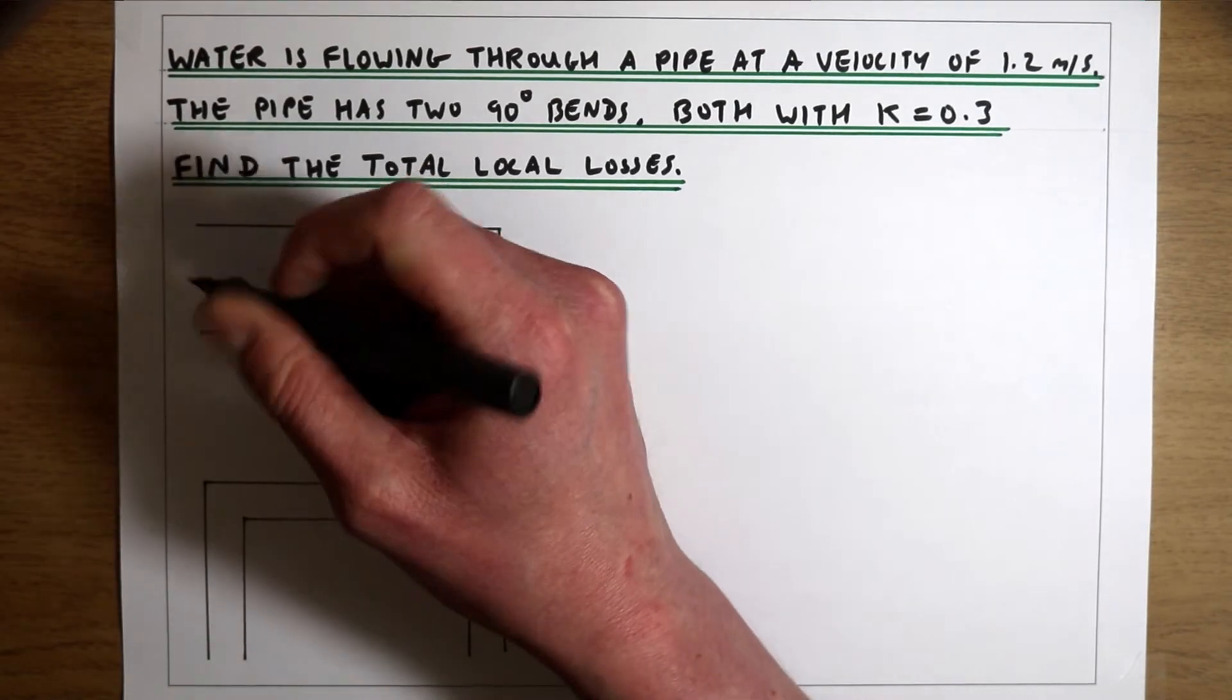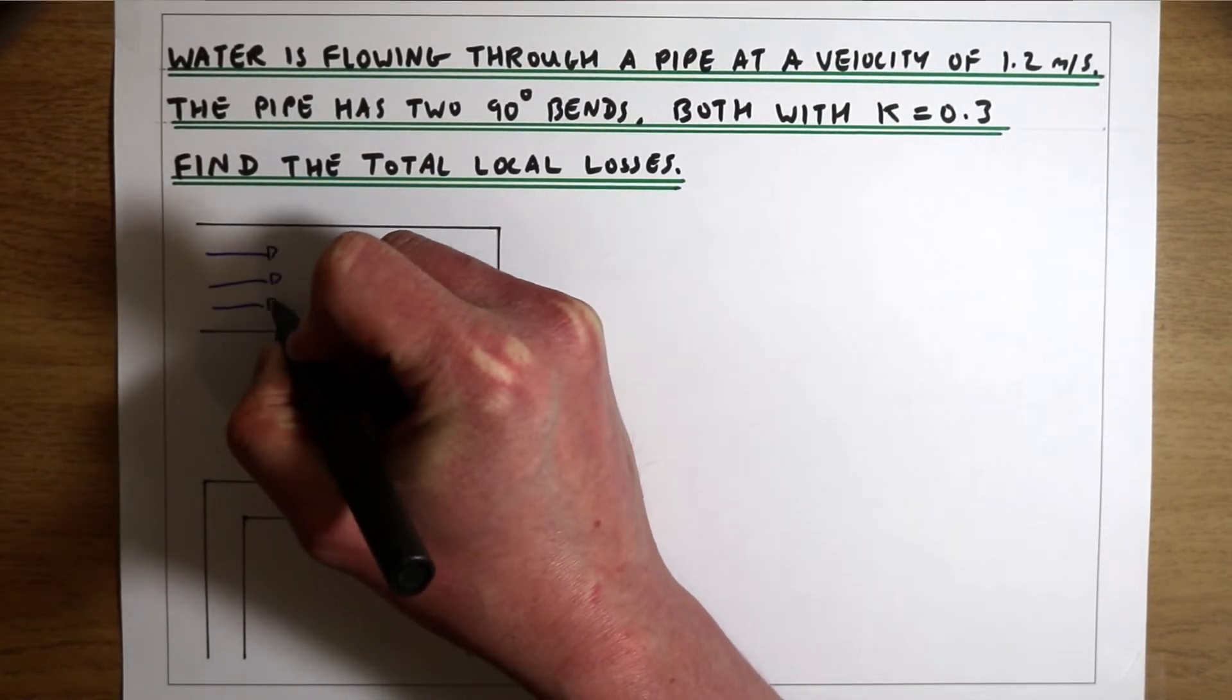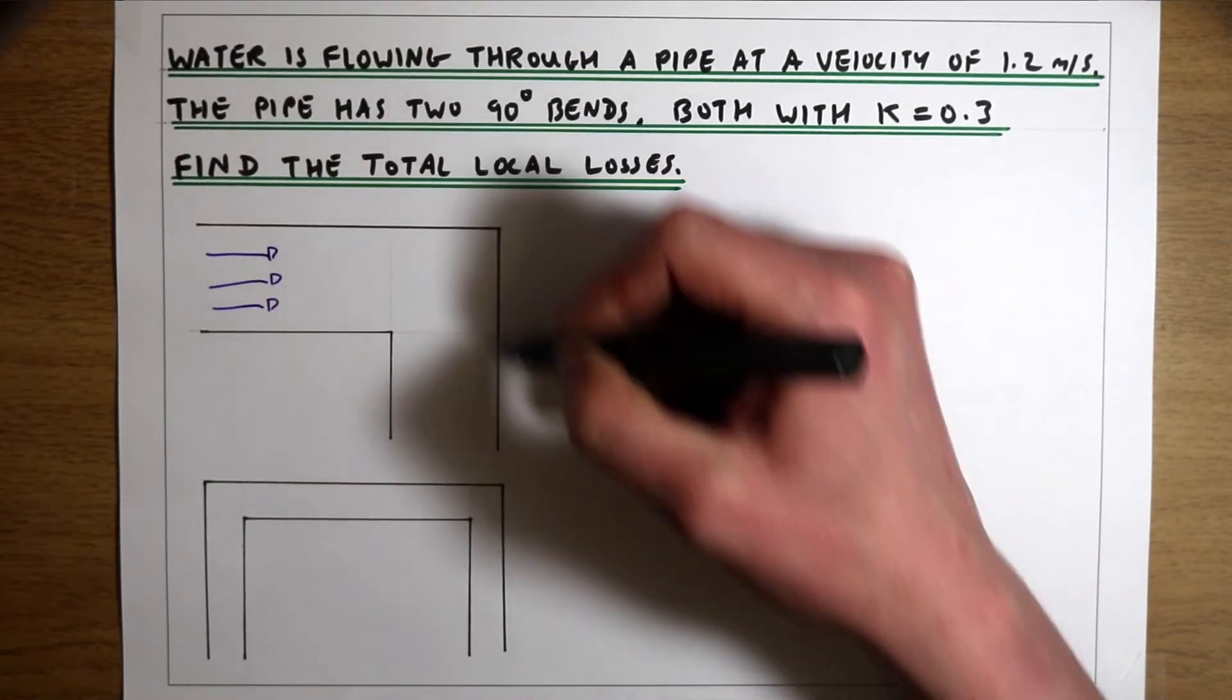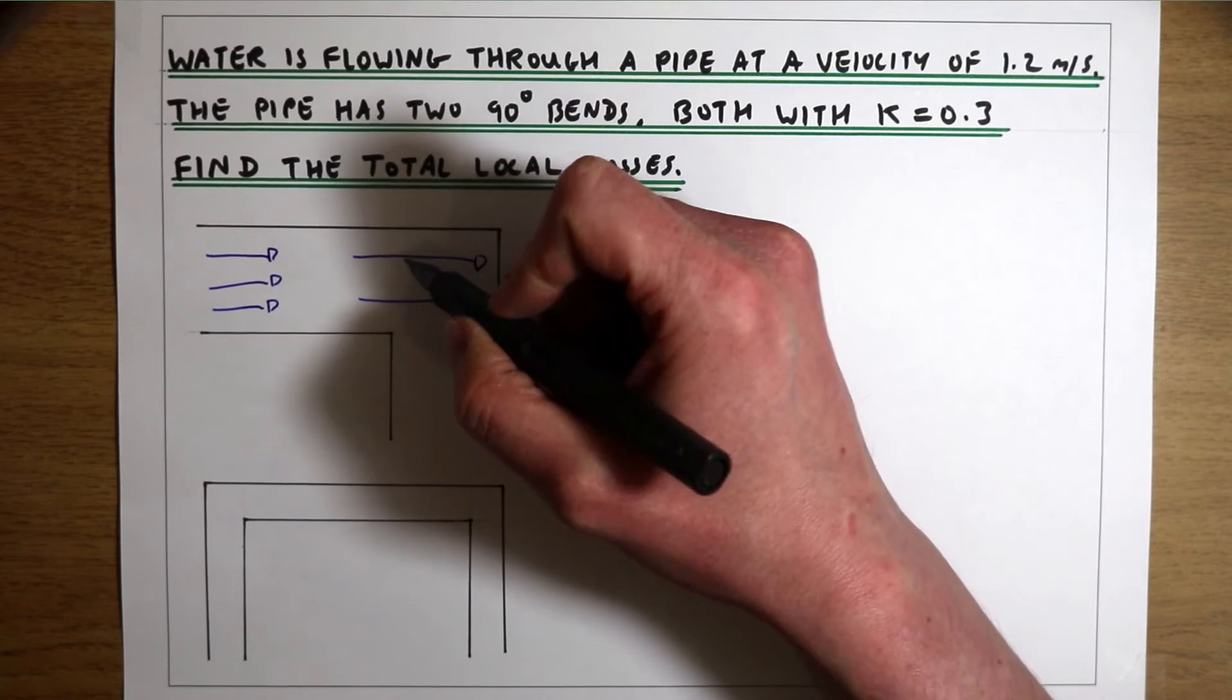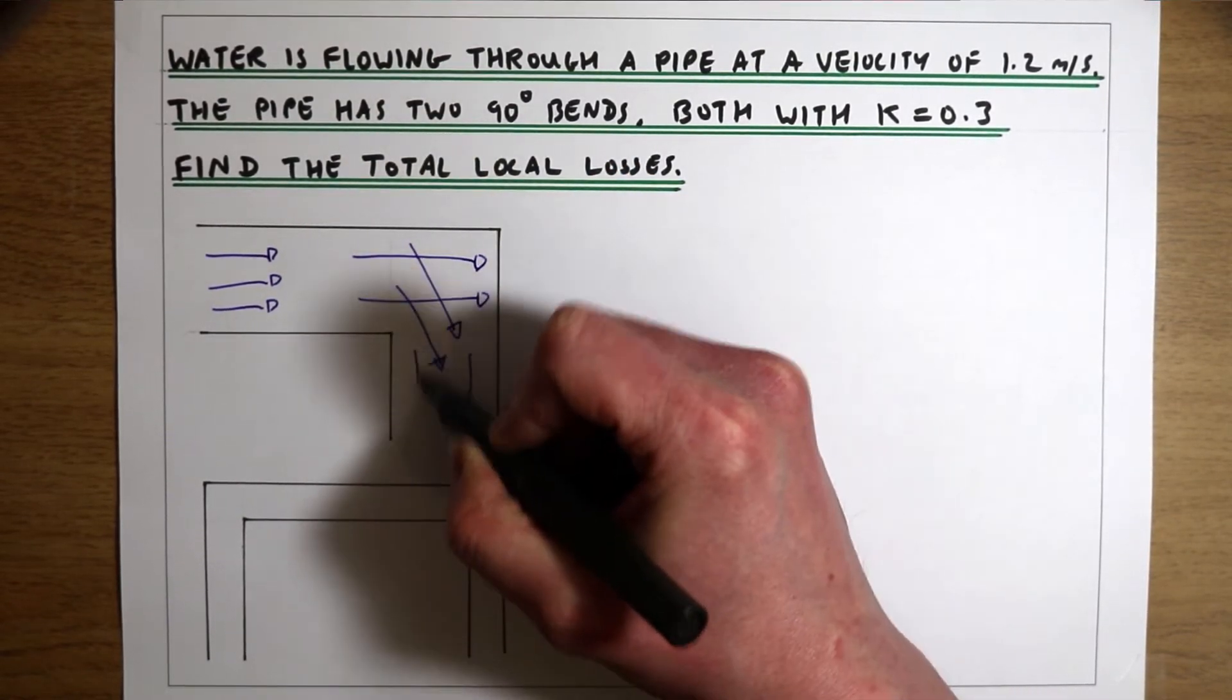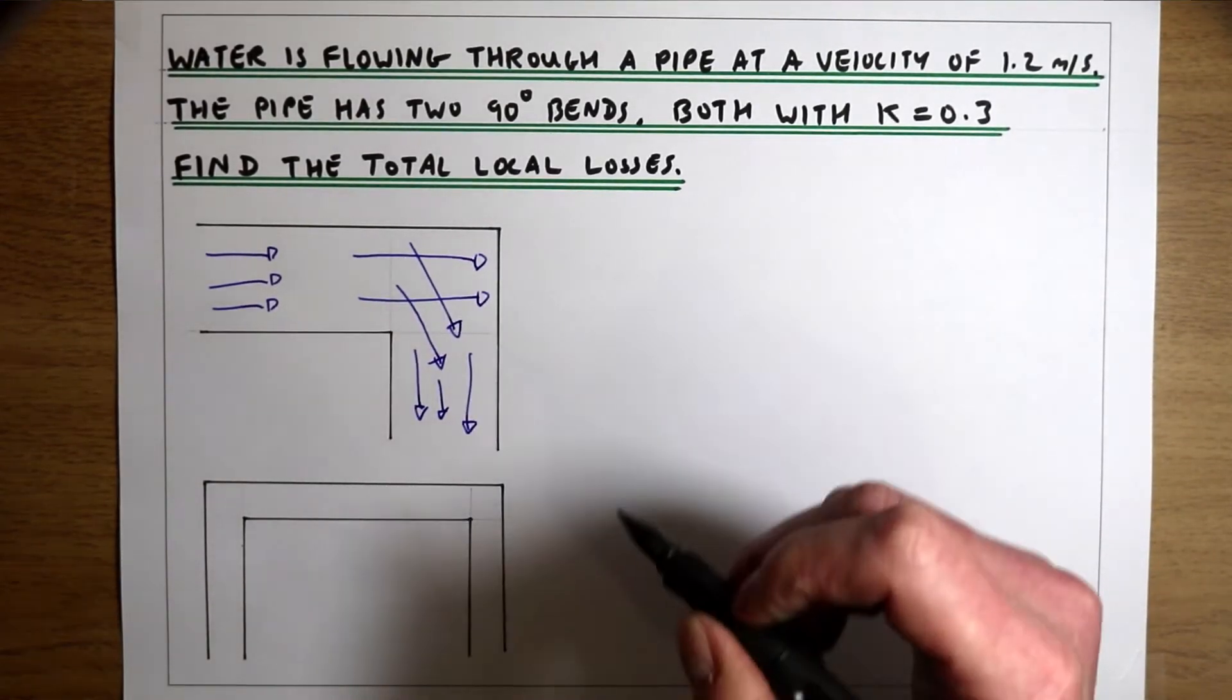If you think about water moving through a pipe, if that water comes to a bend, the bend has to force the water to change direction, which is going to give you a loss in energy. As the water hits this wall of the pipe, the bends are going to try to force the water to move down the pipe, and that is going to give you some loss of energy.